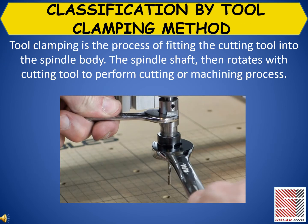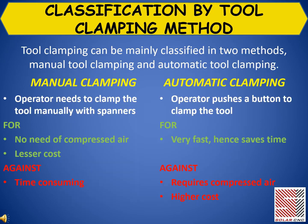Classification by tool clamping method. Tool clamping is the process of fitting the cutting tool into the spindle body. The spindle shaft then rotates with the cutting tool to perform the cutting or machining process. Tool clamping can be mainly classified in two methods: manual tool clamping and automatic tool clamping.